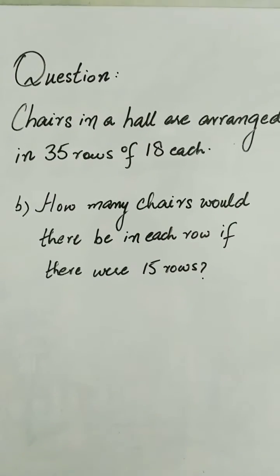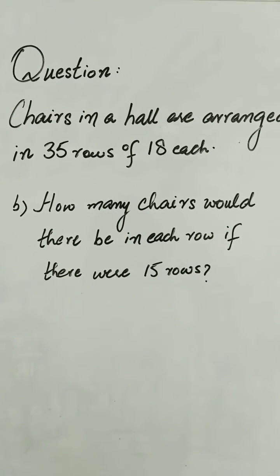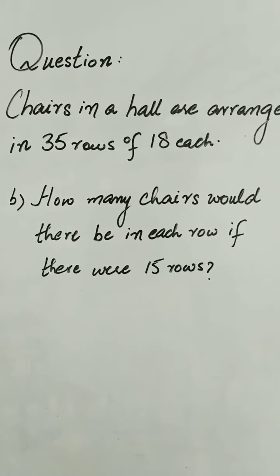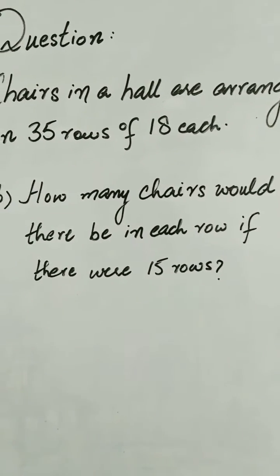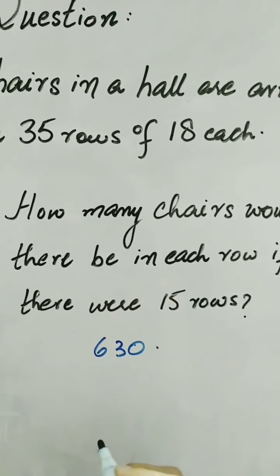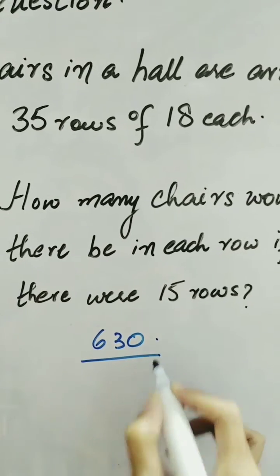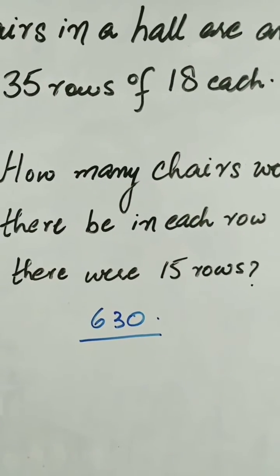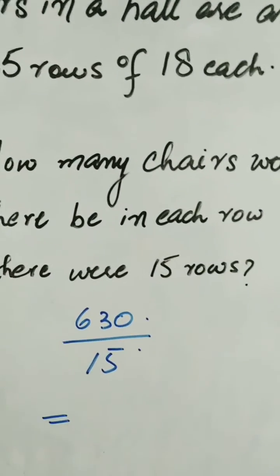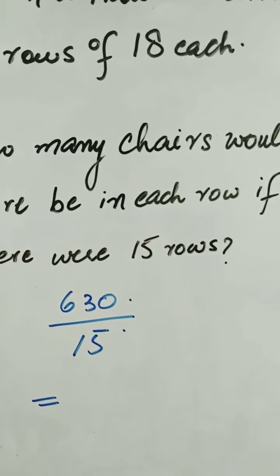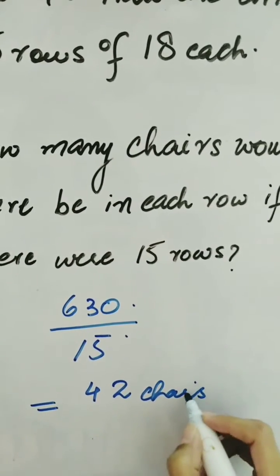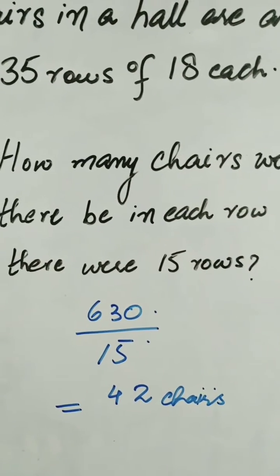Now in part B: how many chairs would there be in each row if there were 15 rows? In part A we solved with respect to the number of rows; now we solve with respect to the number of chairs. The total number of chairs remains 630, found by multiplying 35 by 18. We divide 630 by 15, and it comes out as 42. So if there are 15 rows, there will be 42 chairs in each row.